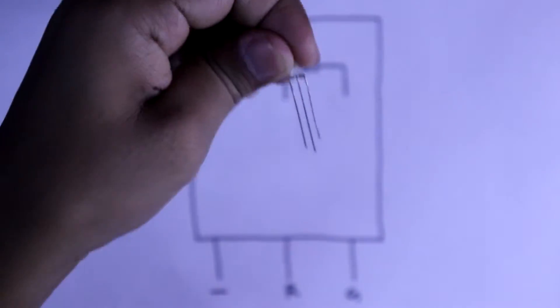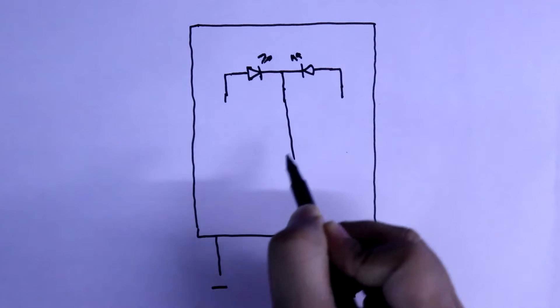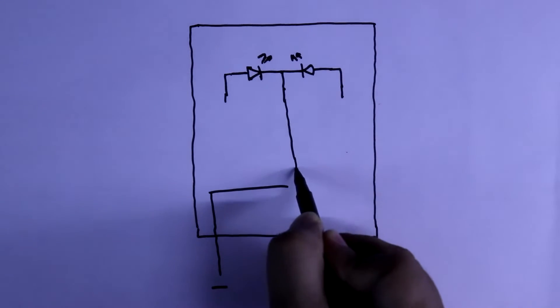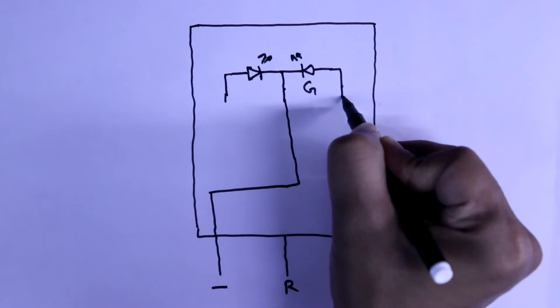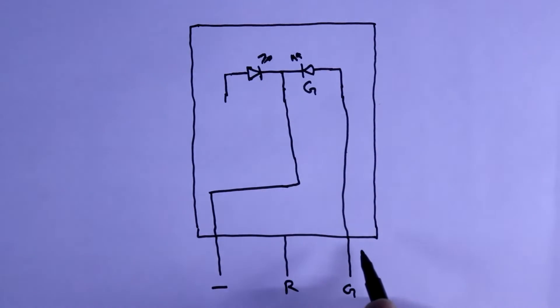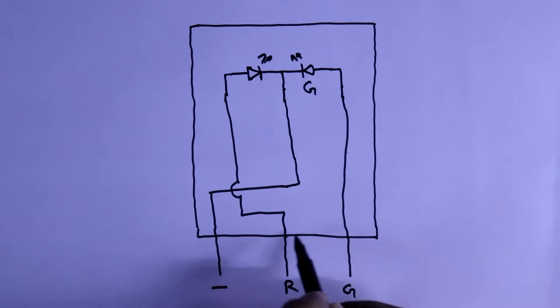These are three pins of the LED. The middle pin is common cathode, so it is connected to the negative pin. This is green LED. Its positive pin is connected to the green pin and the red pin is connected to the middle pin. So, this is how it is connected.